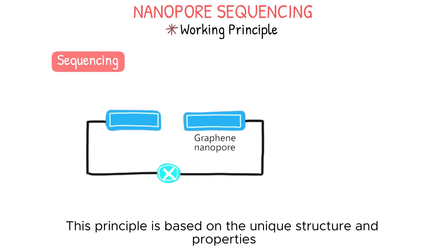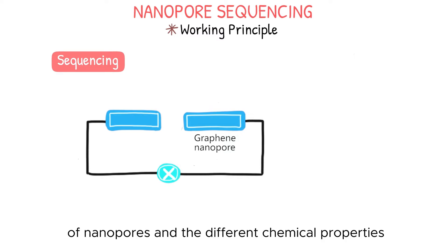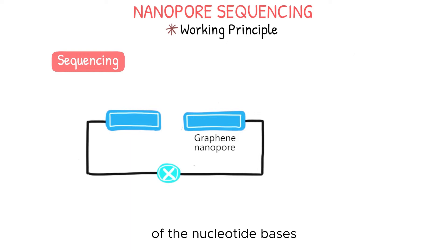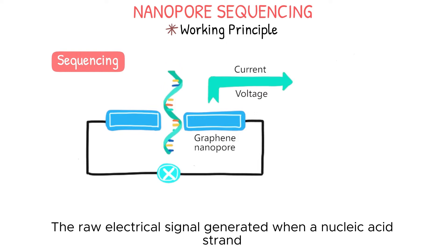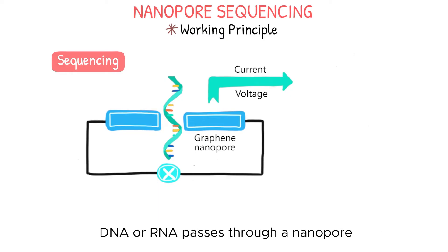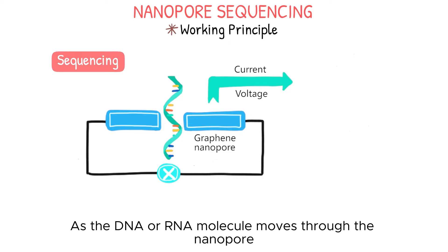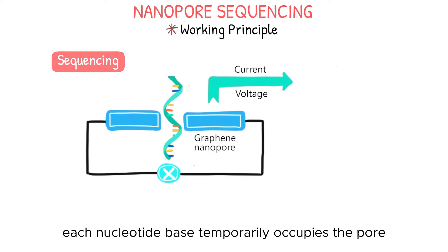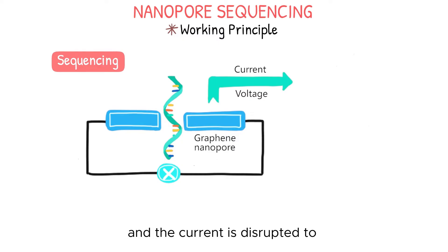Sequencing. This principle is based on the unique structure and properties of nanopores and the different chemical properties of the nucleotide bases. The raw electrical signal is generated when a nucleic acid strand — DNA or RNA — passes through a nanopore. As the DNA or RNA molecule moves through the nanopore, each nucleotide base temporarily occupies the pore, and the current is disrupted to produce a characteristic squiggle.